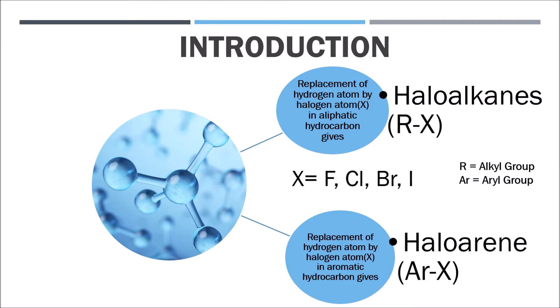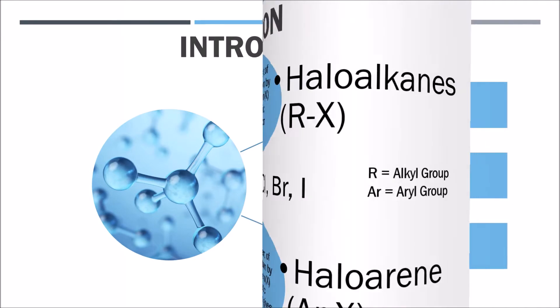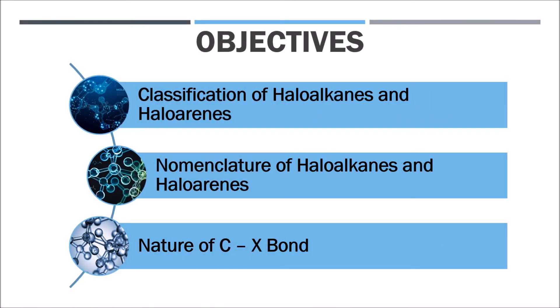So we now know what haloalkanes and haloarenes are — they are derived by substitution of a hydrogen atom in an aliphatic or aromatic hydrocarbon by a halo atom. Today we will cover: first, the classification of haloalkanes and haloarenes; second, their nomenclature; and third, the nature of the C-X bond formed in haloalkanes and haloarenes.